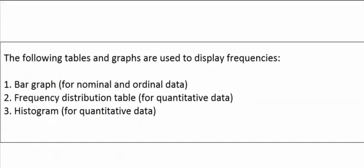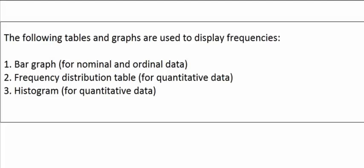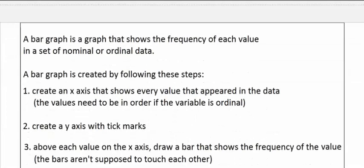Now let's talk about a few different tables and graphs that are used to display frequencies. The first one is a bar graph, which is meant to display frequencies for nominal and ordinal data — basically for qualitative data. We'll also talk about how to create a frequency distribution table for quantitative data, meaning numerical data like heights, weights, or ages. And we'll also talk about how to create a histogram, which is also for quantitative data.